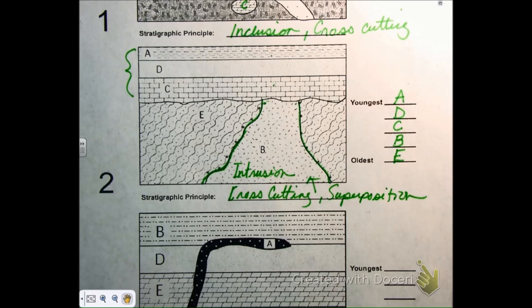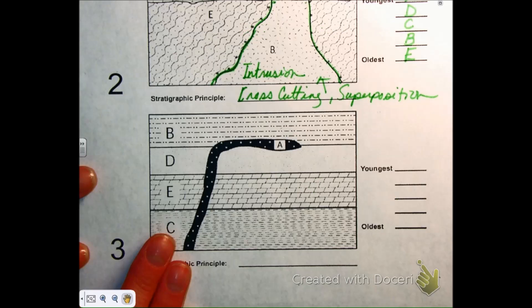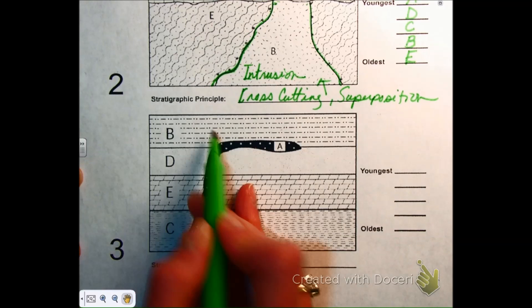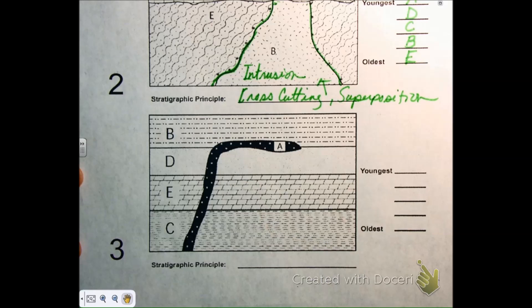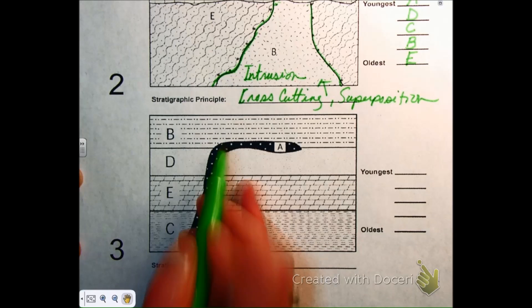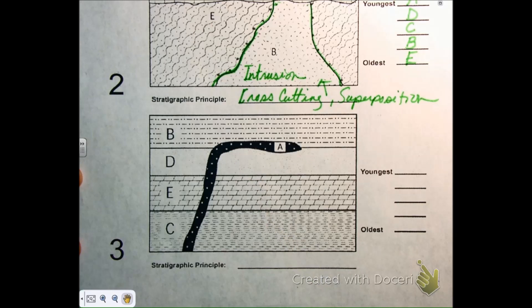On number three, does A intrude into B at all? Yes. It's over the D, it intrudes into B. So that counts. A intrudes into B. It doesn't have to go all the way through the layer to be an intrusion.